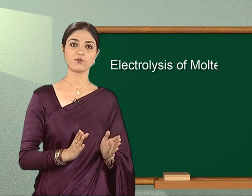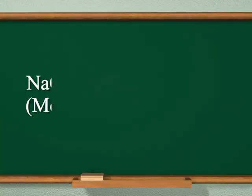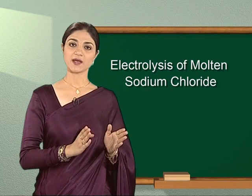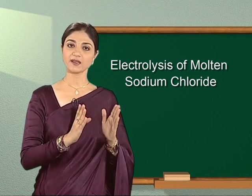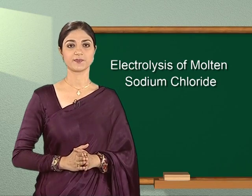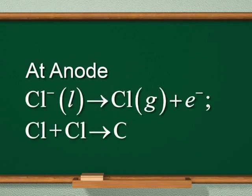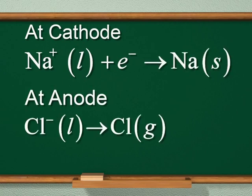Let us look at electrolysis of molten sodium chloride. In molten state, sodium chloride dissociates into sodium ions and chloride ions. On passing electric current through the molten salt in an electrolytic cell, the following changes occur: at the cathode, sodium ions accept one electron to form sodium metal in the solid state; at the anode, chloride ions release electrons to form chlorine atoms, and two chlorine atoms combine to form a chlorine molecule. Thus, sodium is deposited at the cathode and chlorine gas is evolved at the anode.